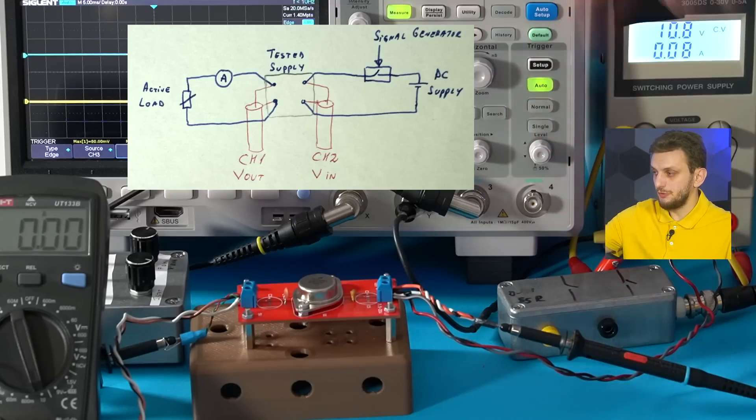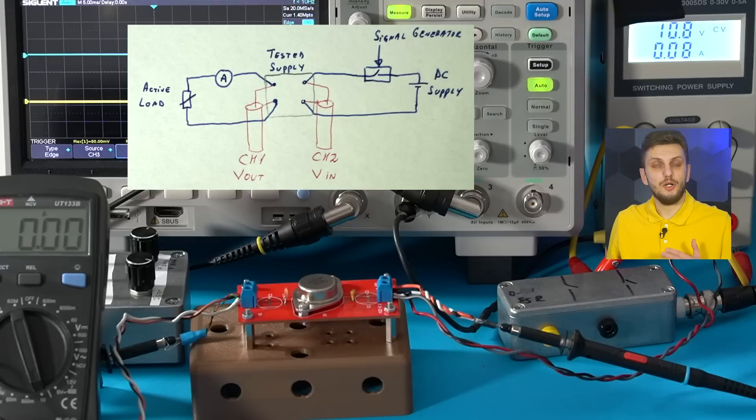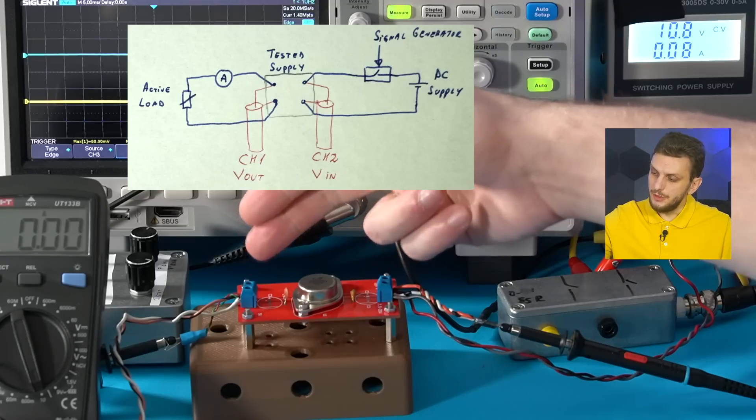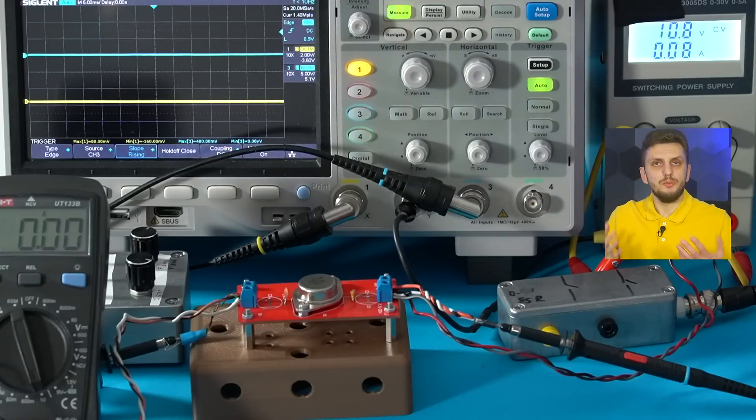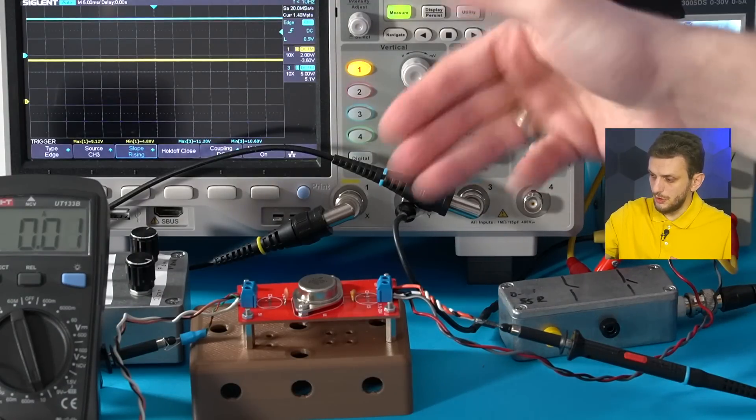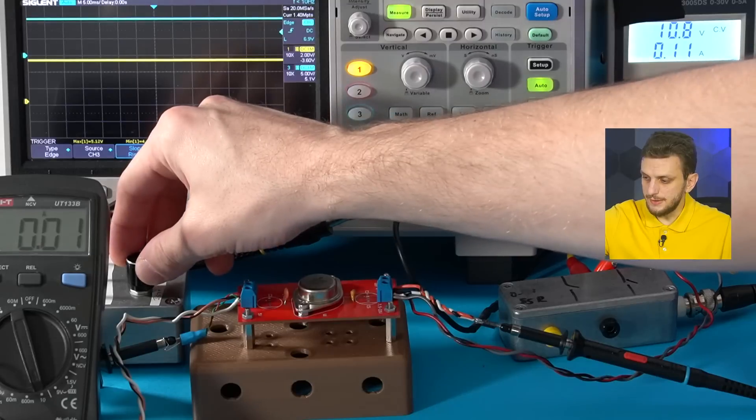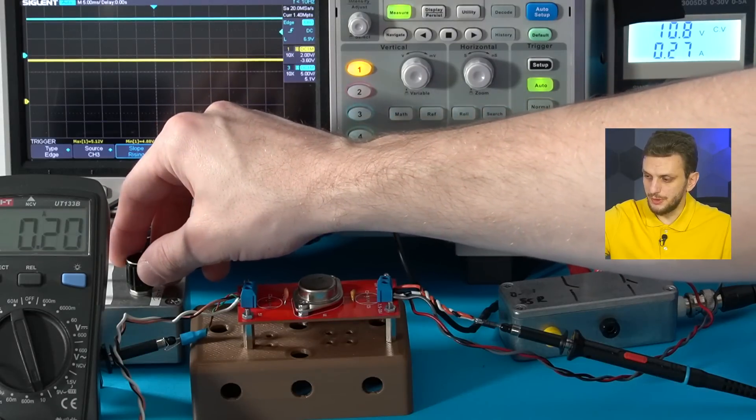Now specifically for the turn on and turn off test I prepared this setup. So here the power supply is connected to the power supply through an electronic switch. So this is being driven by the signal generator which is behind just so we can get a clear on and off transition and then the output is connected to the active load through an amp meter.